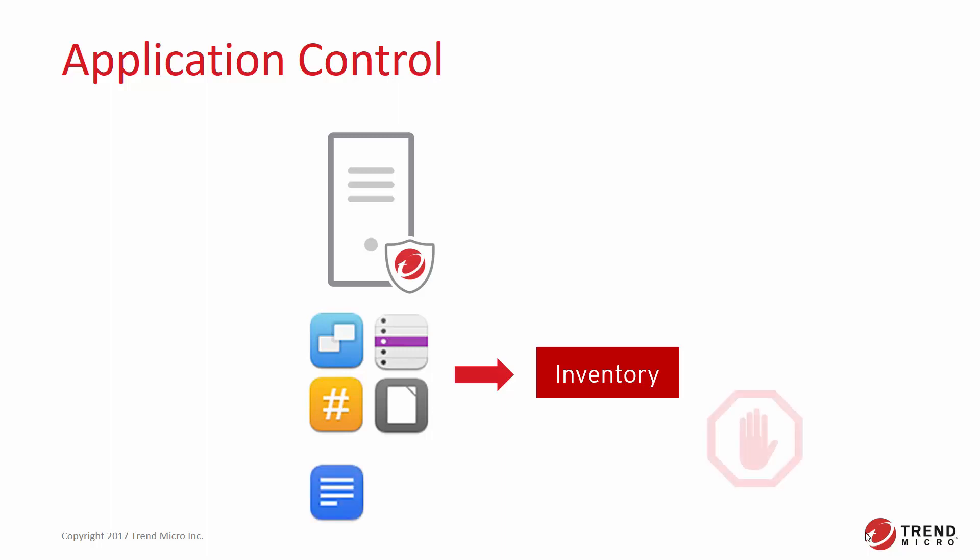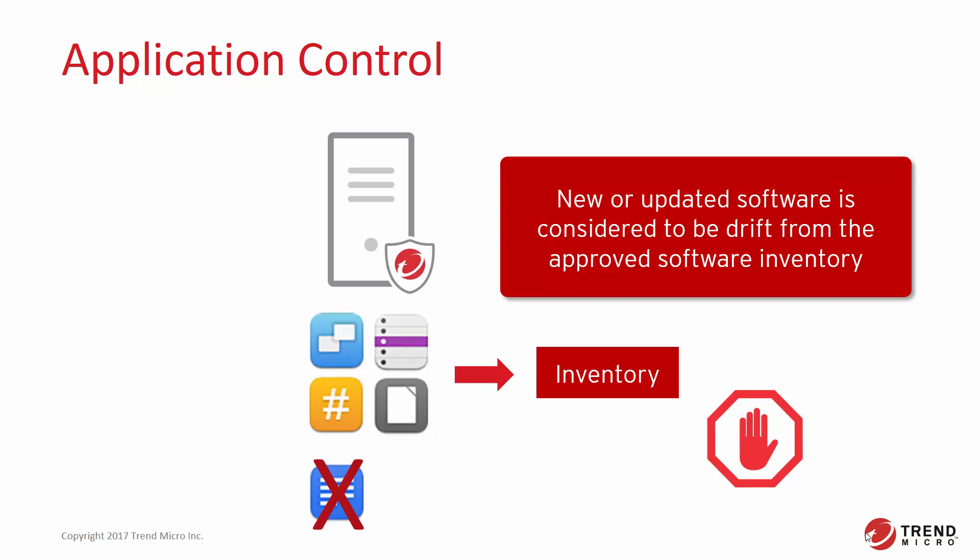Deep Security agents continuously monitor the computer for change. Application Control is integrated with the kernel and file system and has permissions to monitor the whole computer, including software installed by the root or administrator accounts. The agent looks for disk write activity on software files and compares the file with the hashes of the initially installed software to determine if the software is new or has changed.